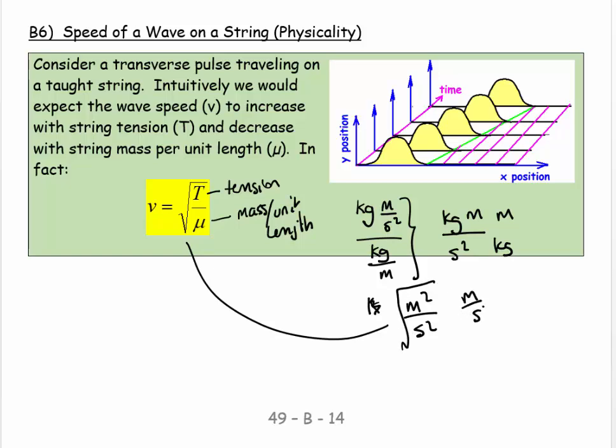It doesn't prove that it's right. But it proves it's dimensionally legitimate. There could be a number seven in front of here. There could be a number nine in front of there. I don't know. But it makes sense.